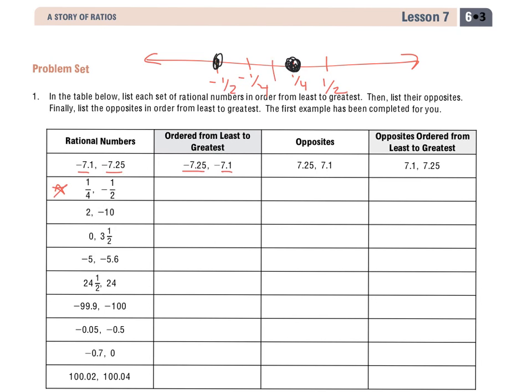So when I'm listing these from least to greatest, I know negative a half is further to the left than a quarter. So that means that it has a smaller value. So it's going to be the least.